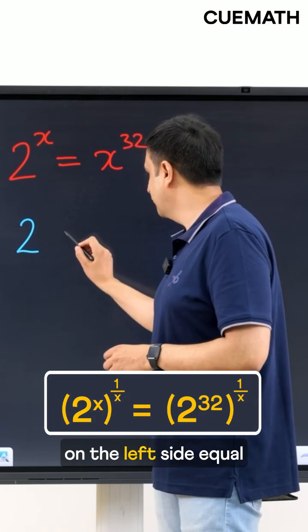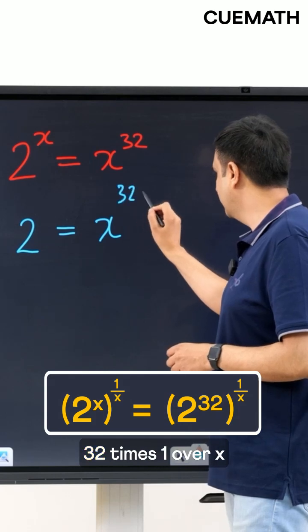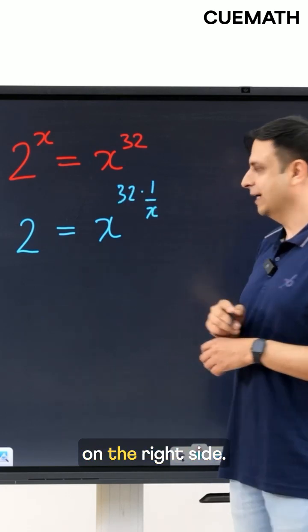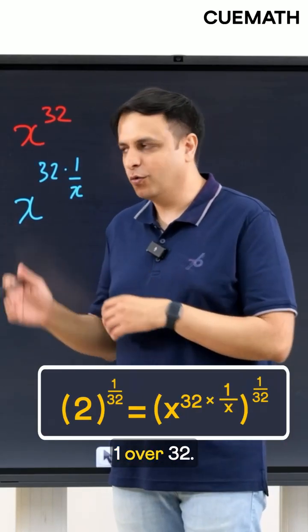That'll give you 2 on the left side equal to x to the power 32 times 1 over x on the right side. Now get rid of this 32 by raising both sides to the power 1 over 32.